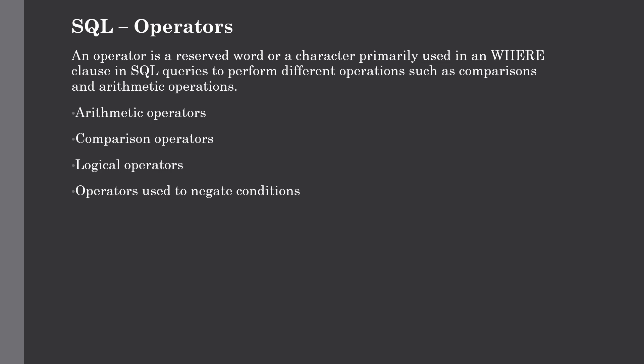Now we will discuss the different operators in SQL. In SQL, an operator is a reserved word or character primarily used in the WHERE clause of a SQL statement to perform comparisons and arithmetic operations. Operators are used for specifying conditions in a SQL query and serve as conjunctions for multiple conditions in a single statement. There are four major types: arithmetic, comparison, logical, and operators for negating conditions.